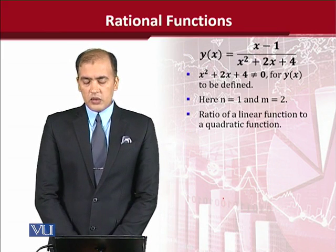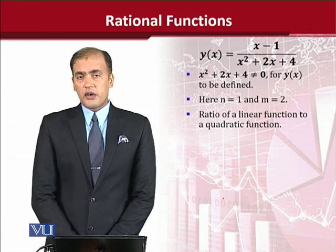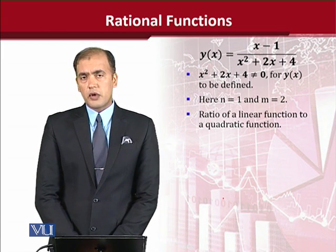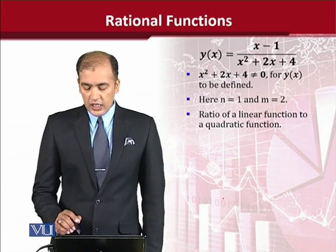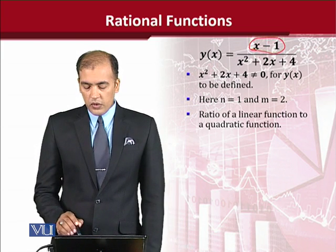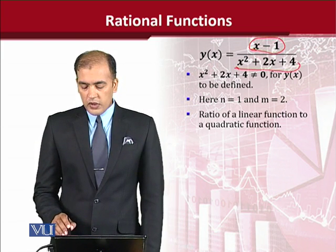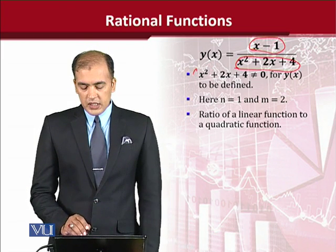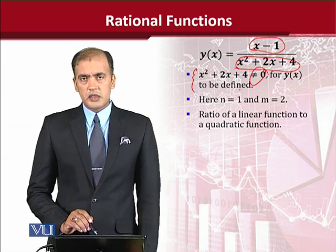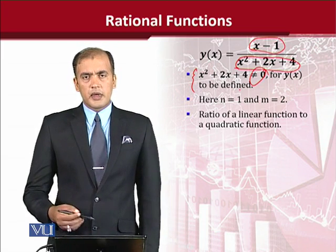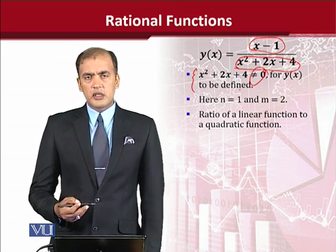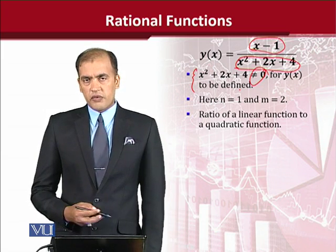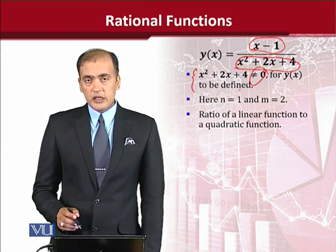Now, this is a numeric example of a rational function which is composed of polynomial functions. As you can see in the numerator, there is a polynomial and there is a polynomial in the denominator as well. The caveat comes here again that the denominator must not be equal to zero in order to make the rational function a defined function rather than the undefined function.